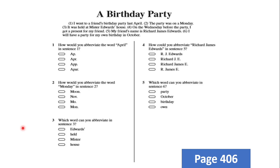Now open to page 406. We will choose the right choice. Let's read: 'A Birthday Party — I went to a friend's birthday party last April.' How would you abbreviate the word April? Memorize the abbreviation: A, P, R, dot — capital A, ended with a dot. How would you abbreviate Monday in sentence two? The party was on a Monday — M, O, N.